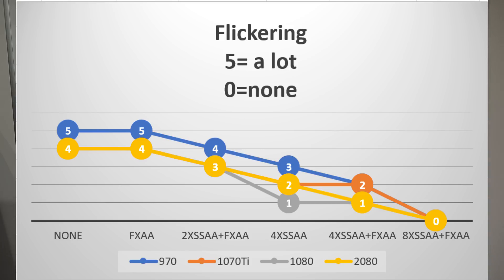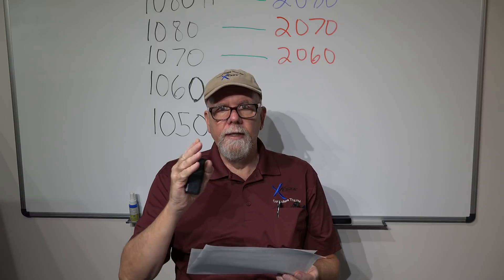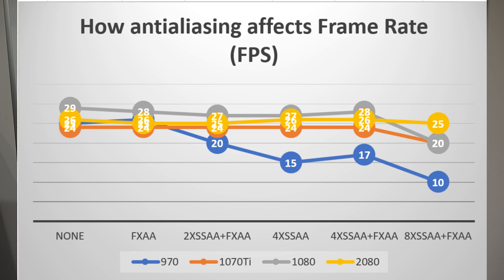The question is how does anti-aliasing affect the frame rate? Here's what happened with the 970: with no anti-aliasing, it was roughly 24 frames per second with three monitors and everything maxed out. When I got to 8x anti-aliasing, my frames per second dropped to 10, which is absolutely terrible — not beneficial and very inefficient. If you go back one step to the 4x setting, you get back up to 17, 15, or 20 frames per second.